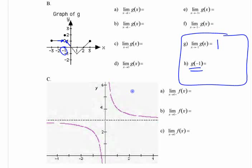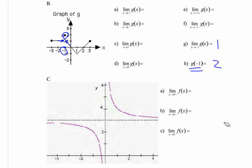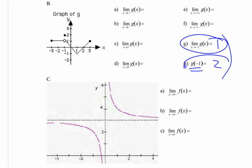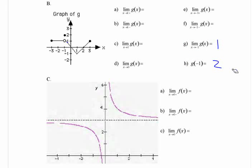But the actual function value is 2. Later on we're going to see that this is a way of looking at whether the function is continuous at that point or not. This function is not continuous at that point — it suddenly jumps up and back down. It's not continuous because the limit as you get close isn't the same as the actual value.